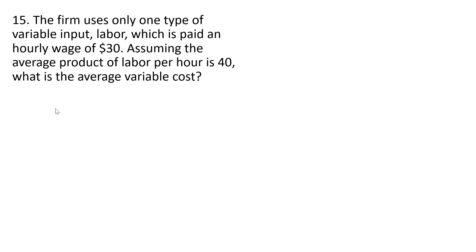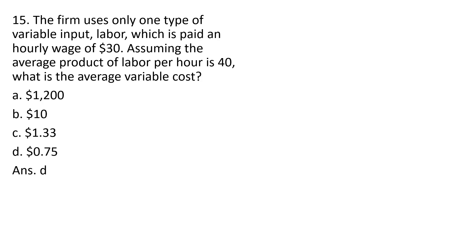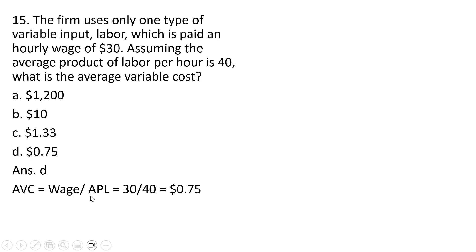The firm uses only one type of variable input, labor, which is paid an hourly wage of $30. Assuming the average product of labor per hour is $40, what is the average variable cost? The correct answer is D. Average variable cost can be calculated as the wage divided by the average product of labor. So $30 divided by $40 gives us an answer of $0.75. Answer D.